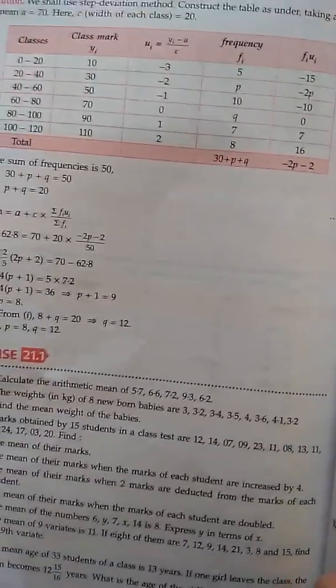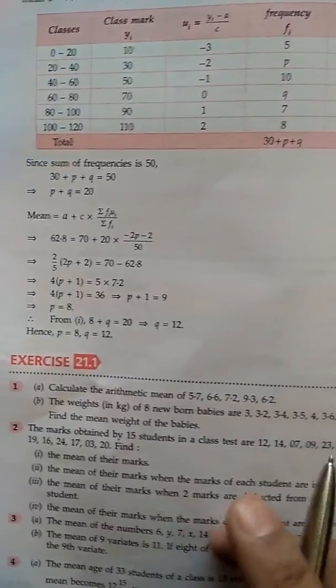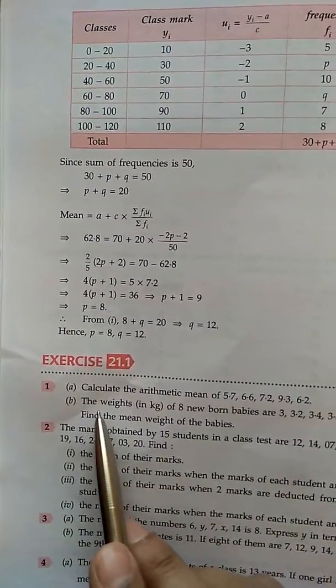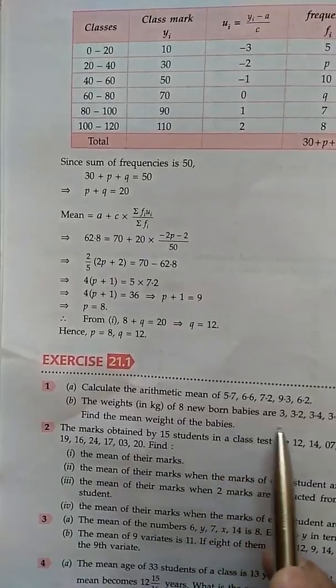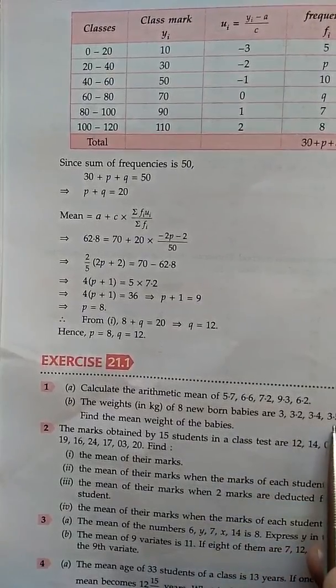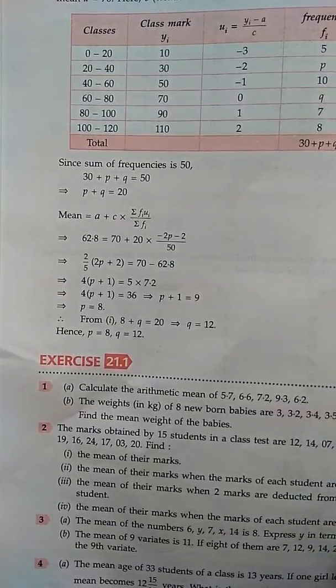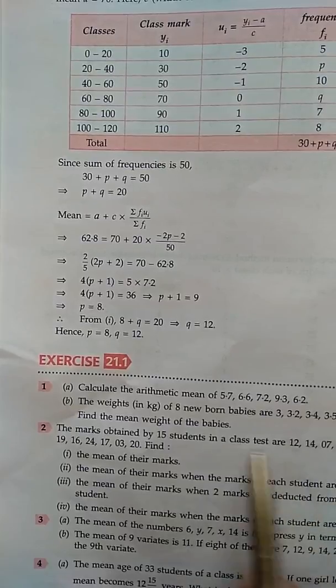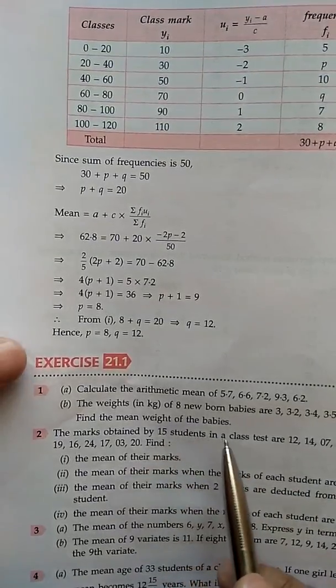We will also try the second part of question number 1. The question is: The weights in kg of 8 newborn babies are 3, 3.2, 3.4, 3.5, 4, 3.6, 4.1, 3.2. Find the mean weight of the babies.